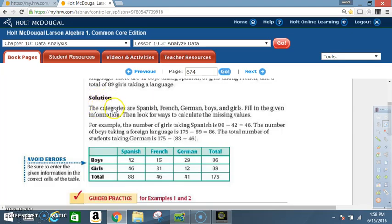Solution. The categories are Spanish, French, German, boys, and girls. Fill in the given information. Then look for ways to calculate the missing values. For example the number of girls taking Spanish is 88 minus 42 which is equal to 46. The number of boys taking a foreign language is 175 minus 89 which is 86. The total number of students taking German is 175 minus parentheses 88 plus 46.